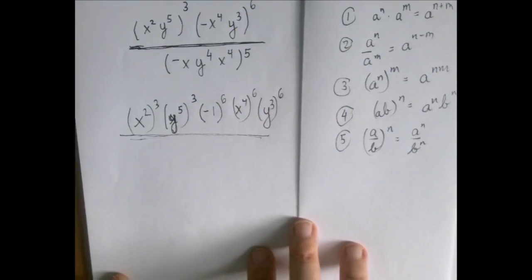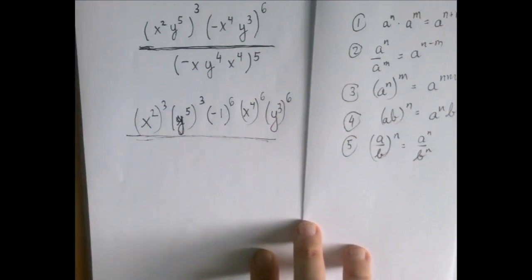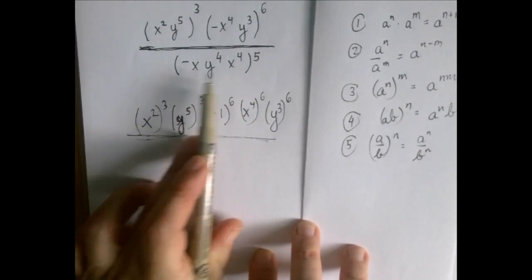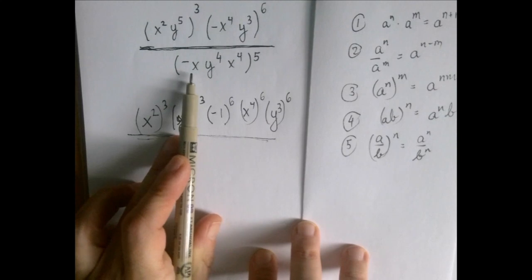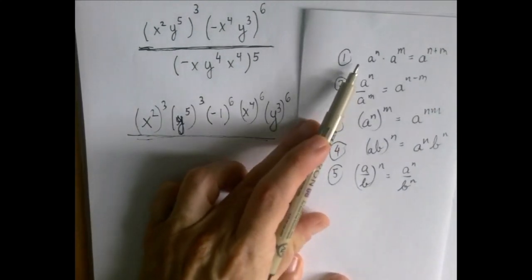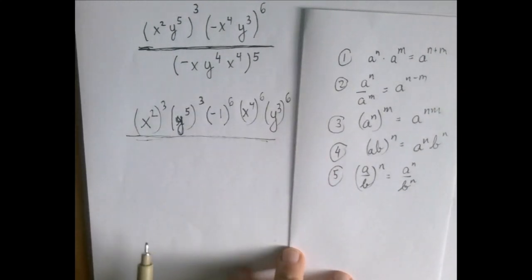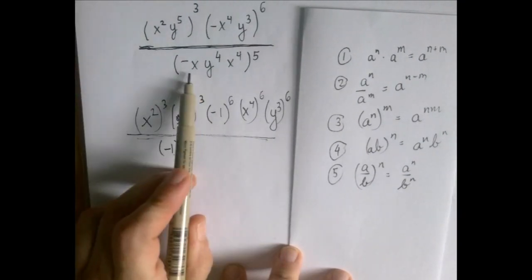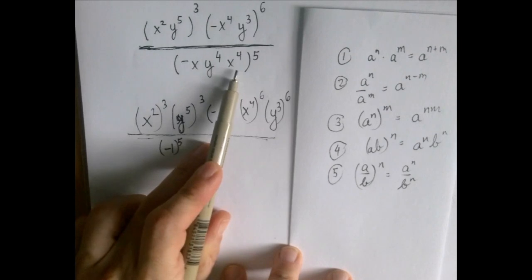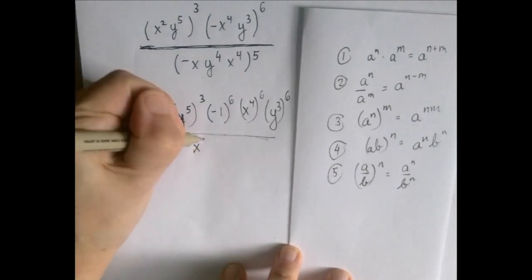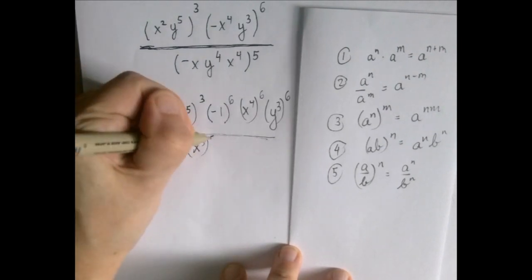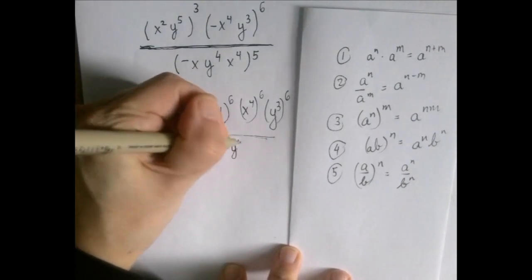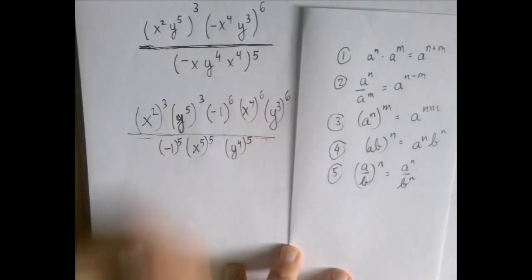The same thing applies in the denominator, except we should consolidate first. We're going to have less work to do if we think of X times X to the fourth as X to the fifth, based on the first rule of exponents. So we get negative one to the fifth power, X to the fifth power further exponentiated to the fifth power, and Y to the fourth power exponentiated to the fifth power.